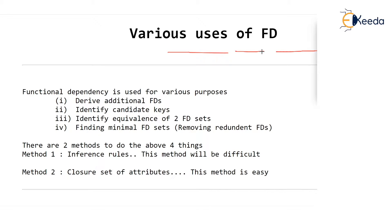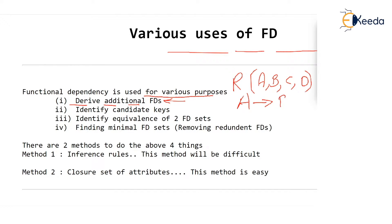Functional dependencies can be used for various purposes. The first purpose is to derive additional FDs. As an example, imagine we are given a table R which has four attributes A, B, C, D, and some functional dependencies are defined by the creator of this table: A determines B, and CD determines A. Now what we want to know is whether there are any additional functional dependencies besides these two — can we derive any more from the given functional dependencies?